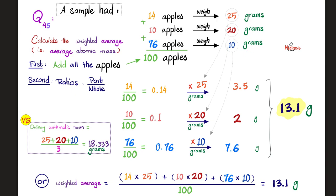Look at the weighted average — it is skewed towards the smaller apples. 13.1 is closer to 10 than anything else. Why? Because the smaller apples are more numerous — they tip the weighted average in their favor. As for the measuring unit, you use whatever unit you are given. If I give you atoms in AMU, then you use AMU — atomic mass unit.